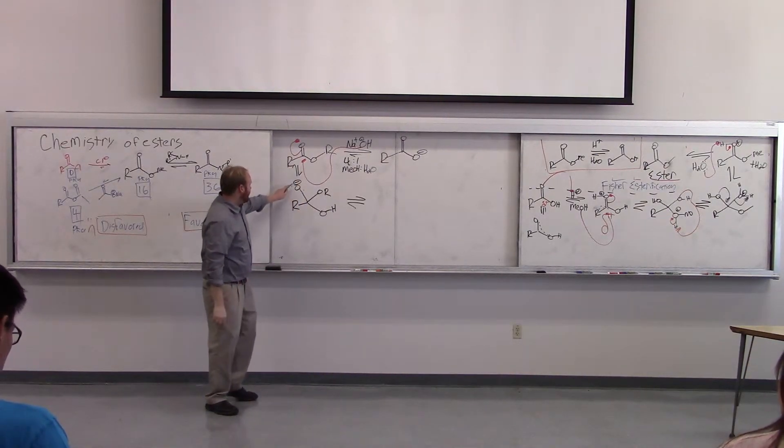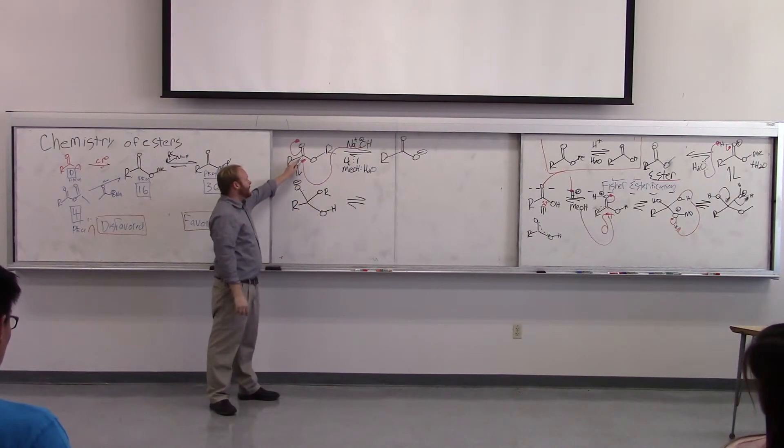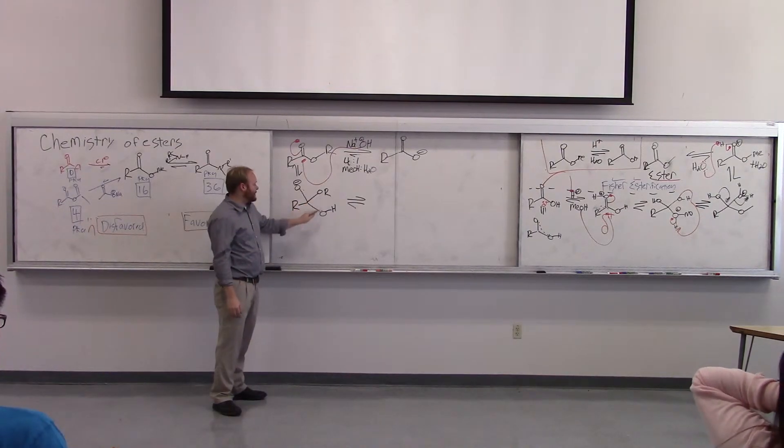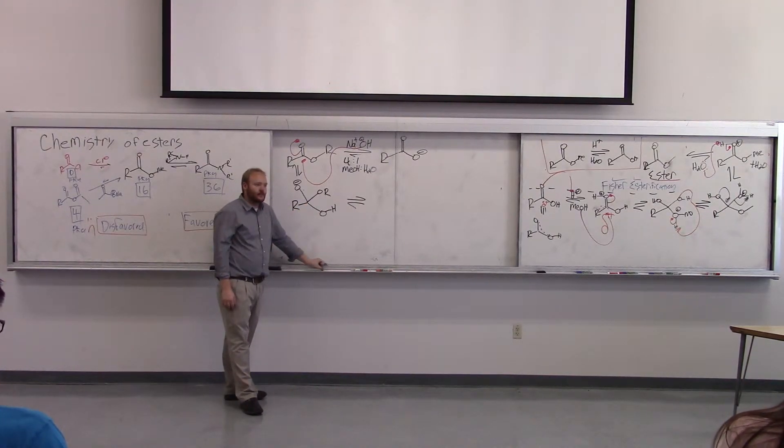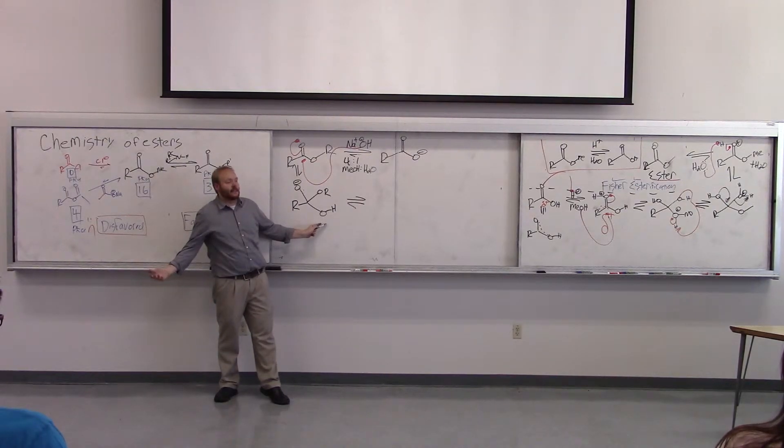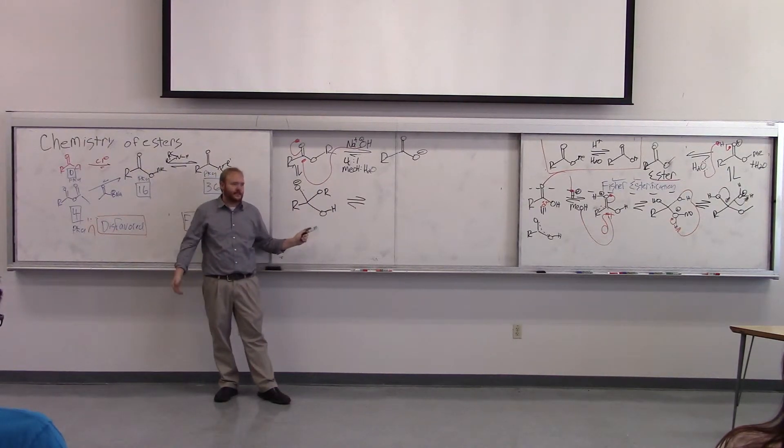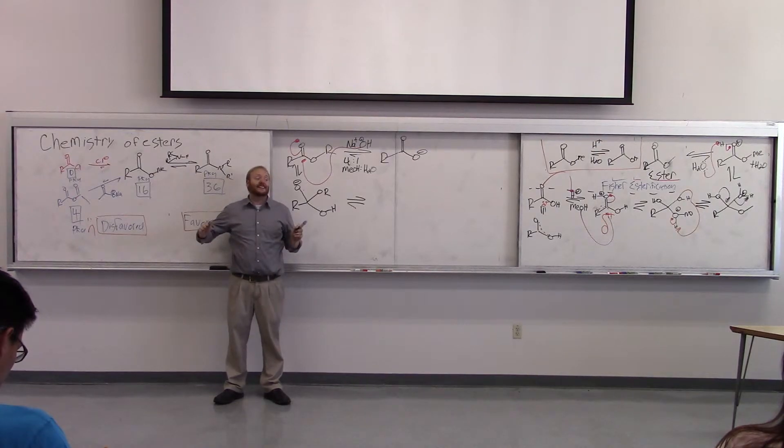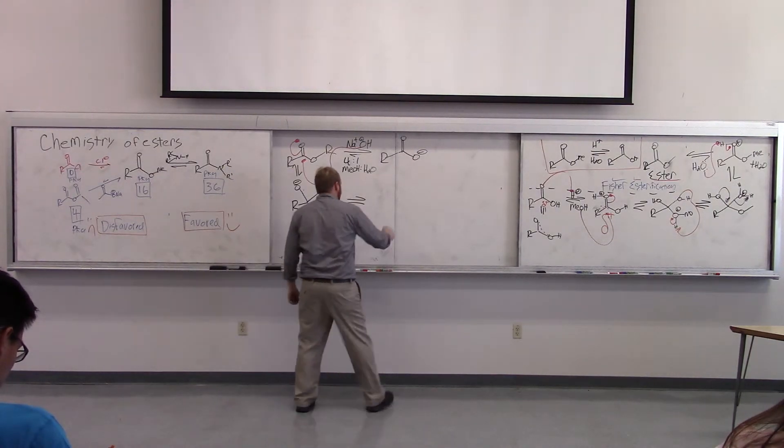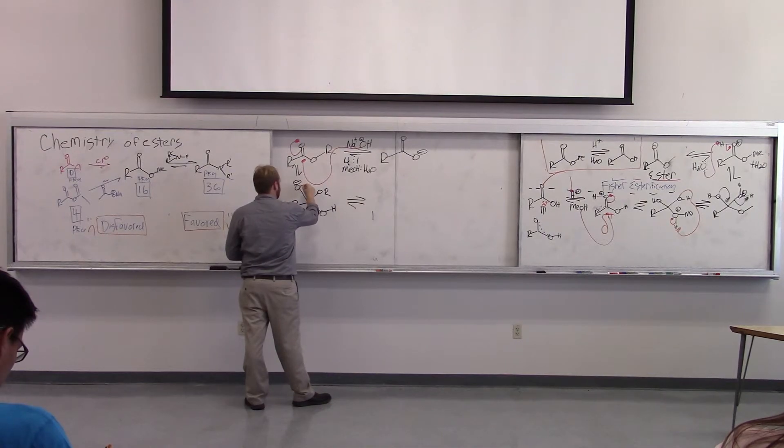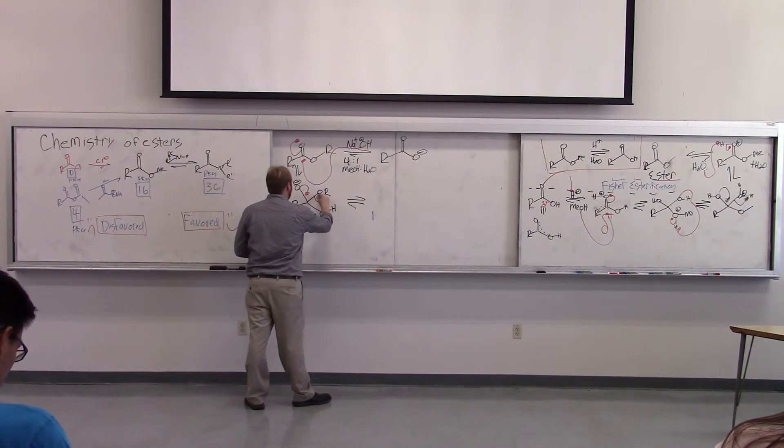So now this will do two things. It can kick off OH minus and go back to the product, go back to the starting material, or we can kick off RO minus. Should there be any preference for kicking off OR minus or OH minus? Well, we know the product, but based on kicking off OH minus, pKa of 16 for its conjugate acid, RO minus, pKa of 16 for its conjugate acid, would you expect there to be a preference between which one of these kicks out? Absolutely not. So there's going to be no preference. So this is probably a very non-impressive equilibrium. Well, let's kick off OR. I'm going to kick off OR in this case.